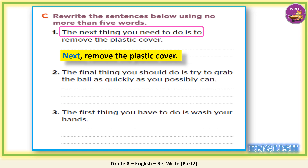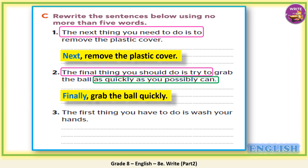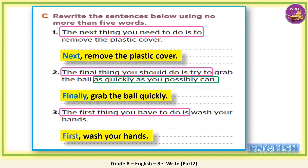Number two: 'The final thing you should do is try to grab the bowl as quickly as you possibly can.' We can make this sentence shorter. Remove 'the final thing you should do is try to' and use just one word. Also, you can use another word for 'as quickly as you possibly can'. And it goes like this: Finally, grab the bowl quickly. Number three: 'The first thing you have to do is wash your hands.' Instead of saying 'the first thing you have to do', we can just write one word. First, wash your hands.